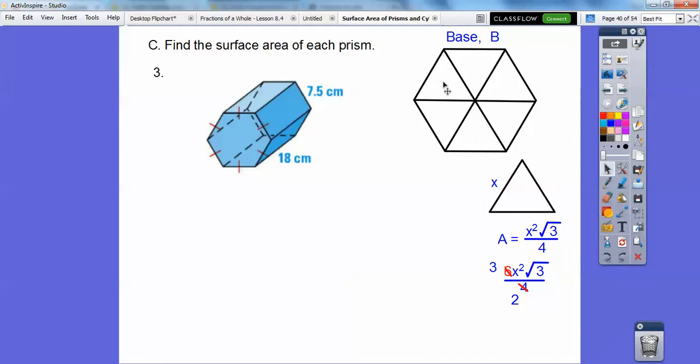So here's the base right here. The base is 3x squared root 3 over 2. Let's plug in 7.5. So when we do that, there's the square root of 3. So let's get our decimal. So the base, two of them is 292.28.